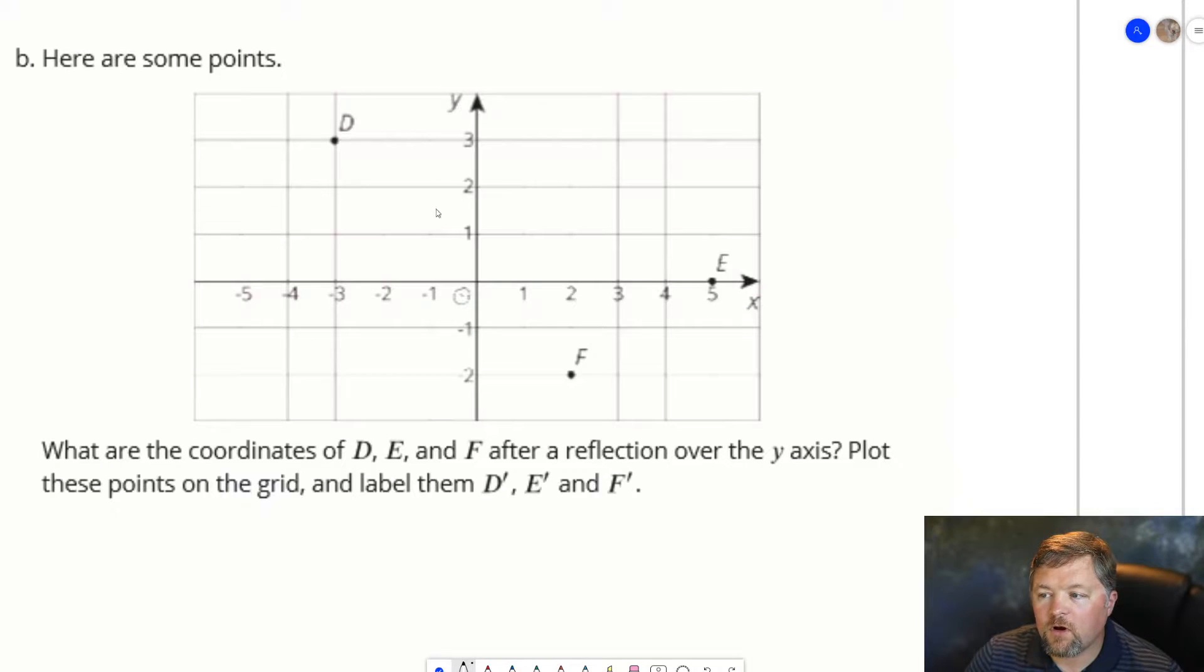The y-axis is the vertical axis. If we're reflecting over that, D', which is 3 units away, we go perpendicular and the same 3 units away. E' is 5 units away right now, 5 units away on the other side. F is 2 units away, so we will go 2 units away on the other side for F'. Remember, we go perpendicular to the line of reflection, straight across the same distance.